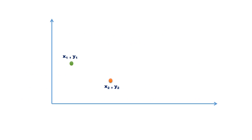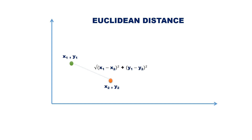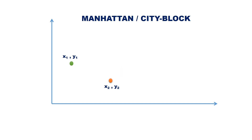How do we measure the distance between two points on a two-dimensional plane? Assume you have two points (x1, y1) and (x2, y2). There are different methods for computing the distance between two points. One important measurement is Euclidean distance: the formula is the square root of (x1 − x2)² + (y1 − y2)². Another measurement is Manhattan distance or city block distance: the formula is |x1 − x2| + |y1 − y2|.